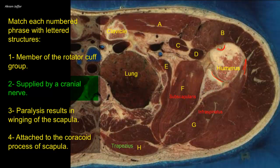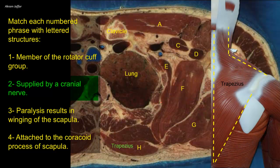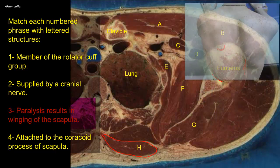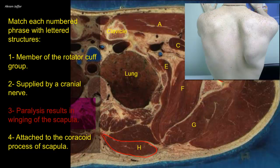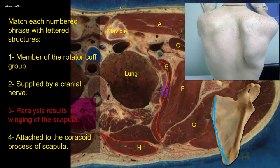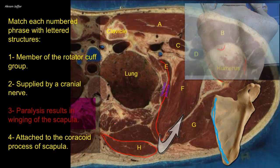Supplied by a cranial nerve: this is the trapezius muscle, which is supplied by the accessory nerve. In this section it is the outermost, most superficial muscle. These are the lower fibers of trapezius heading for the spine of the scapula. Paralysis results in winging of the scapula: winging is produced by serratus anterior — E in this section — a flat muscle in front of subscapularis. Following the muscle, it is attached to the anterior surface of the medial border of the scapula. When this muscle contracts, it protracts the scapula, moving it forwards around the thoracic wall.